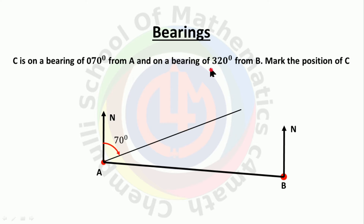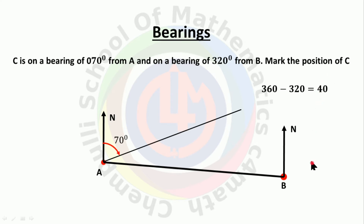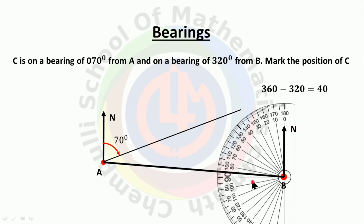Instead, we find the anti-clockwise angle. The angle around a point is 360 degrees. So subtract 320 from 360 to get 40 degrees — the anti-clockwise angle. To mark an anti-clockwise angle, keep the protractor on the left-hand side of the north line. Mark 40 degrees and draw a straight line.